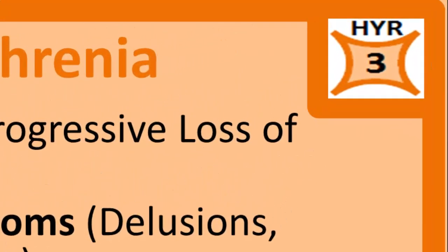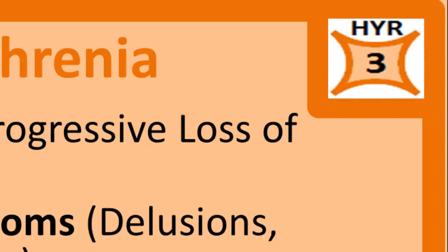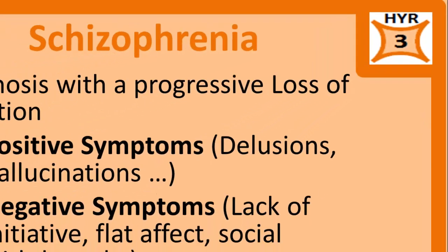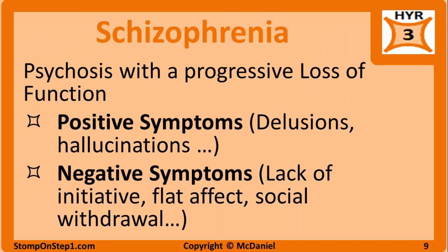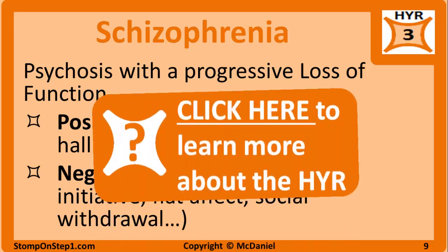You can see here in the top right corner I give schizophrenia a high yield rating of 3. The high yield rating is a scale from 0 to 10 that gives you an estimate of how important each topic is for the USMLE Step 1 medical board exam, based on factors including how often each topic appears on retired Step 1 questions. To learn more about the high yield rating you can click this orange box here.